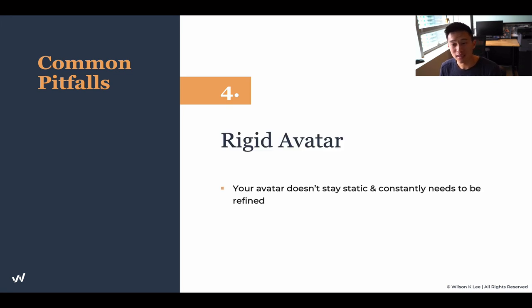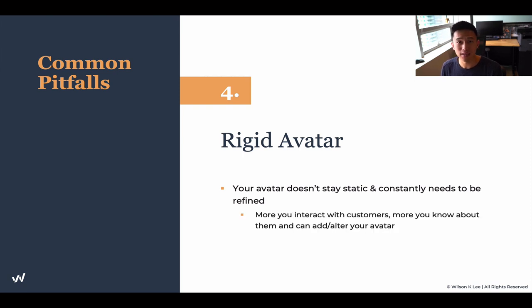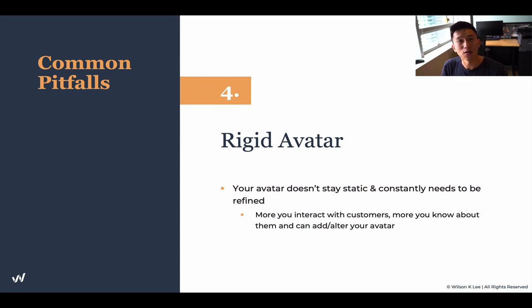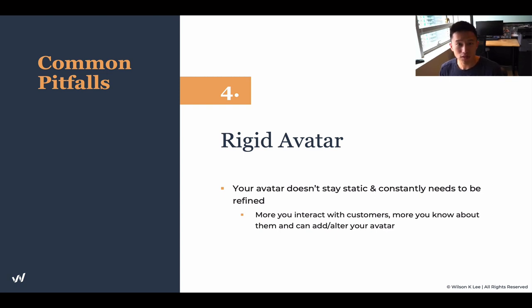The fourth pitfall is having a rigid avatar. Your avatar does not stay static — it constantly needs to be refined. Even big restaurants and companies do this all the time. When we first created our ice cream shop, we were tailoring to millennials, and we still do. But over five years, those millennials have graduated and moved into the next stage of their careers and lives. If we still want them as loyal patrons, we need to evolve with them, offering different things as the business changes. The same applies to social media — five years ago there was no TikTok, but today it's one of the most prevalent platforms. We need to adapt and change with the times.